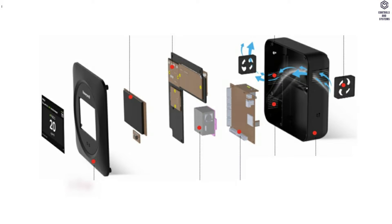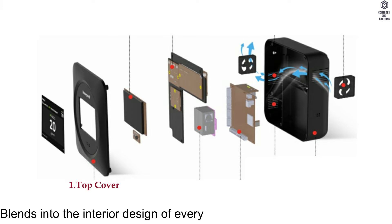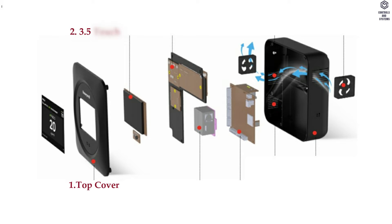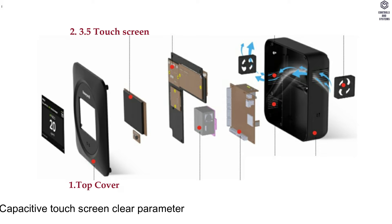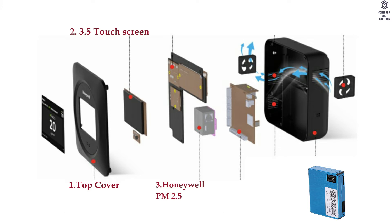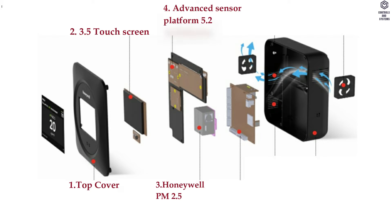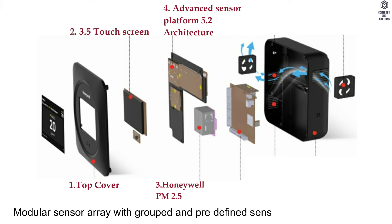Display components: 1. Top cover — blends into the interior design of every building. 2. 3.5-inch capacitive touchscreen with clear parameter visuals and AQI indicator. 3. Honeywell's PM2.5 high-accuracy advanced PM2.5 sensor.